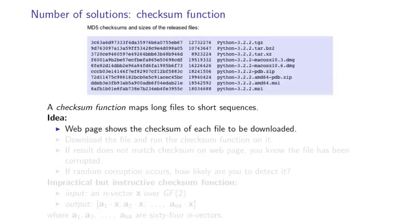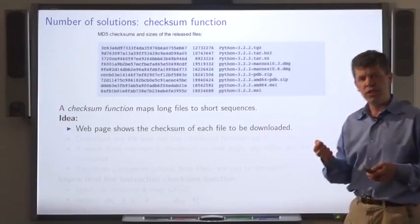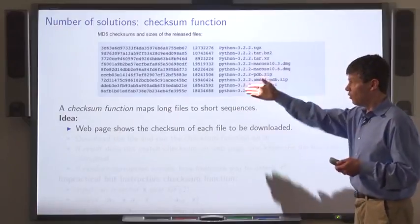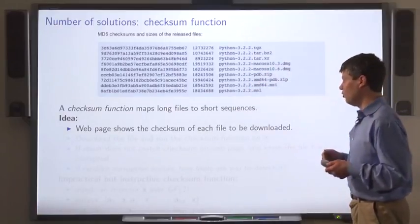A checksum function maps long files to short sequences to enable you to check whether a file you downloaded has been corrupted. So the web page shows the checksums of the files you can download.